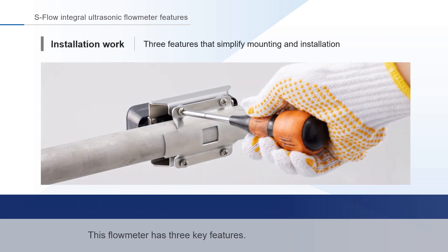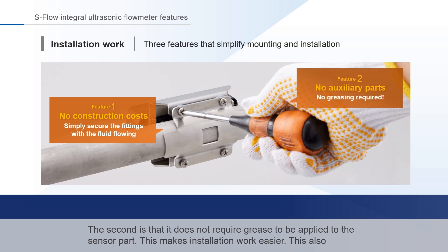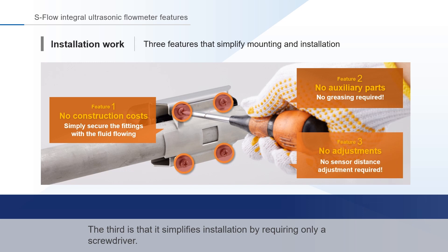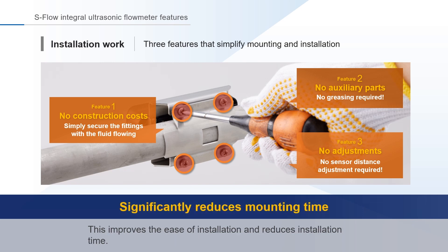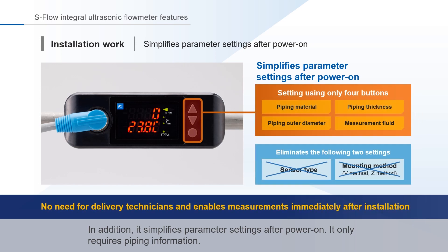This flow meter has three key features. The first is its clamp-on system — it eliminates piping work and can be installed while the fluid is still flowing. The second is that it does not require grease to be applied to the sensor part, which makes installation easier and eliminates the risk of grease contamination. Therefore, it can be used in environments where strict sanitation control is required. The third is that it simplifies installation by requiring only a screwdriver. These features make it easy to install the ultrasonic flow meter even for inexperienced workers, improving ease of installation and reducing installation time. In addition, it simplifies parameter settings after power on, requiring only piping information.